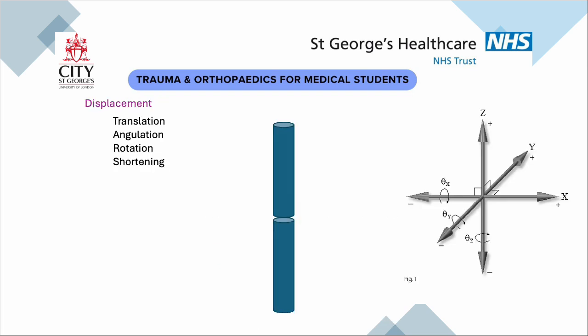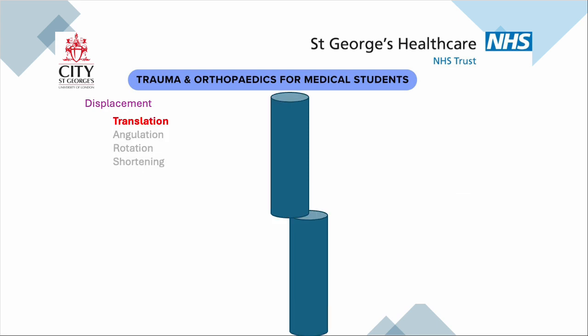A bone can displace in any direction, so you have to describe translation, angulation, rotation and shortening. Translation very simply is a move from one side or the other, and you describe it as whether it's going towards the midline or away from the midline, or superior or inferior — just describe it in relation to the anatomical position of the bone.